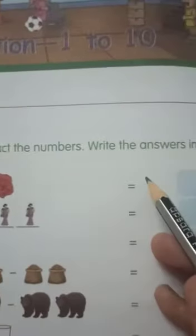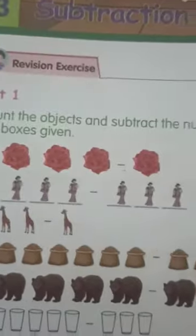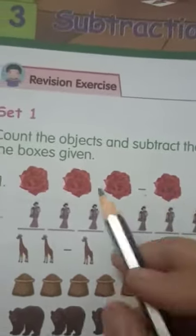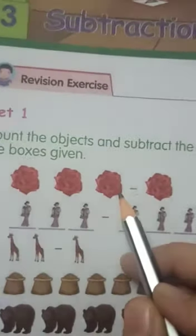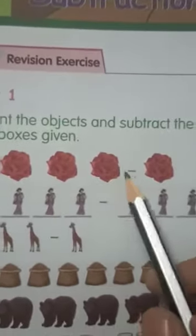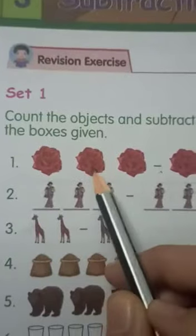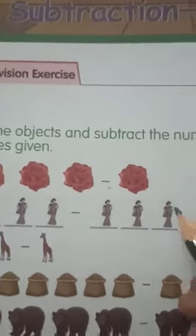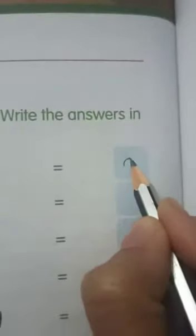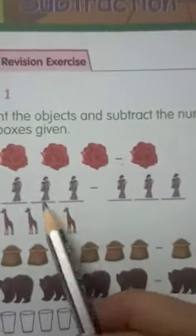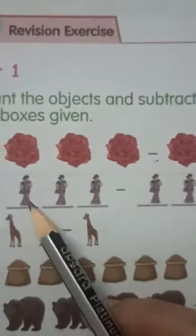We are starting the first set. Here, count the objects and subtract the numbers, write the answers in the given boxes. Here we have to subtract one rose from three roses. If we subtract one from three, we will get only two, so we have to write here two.